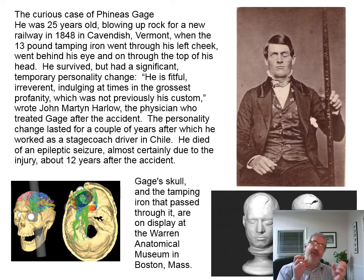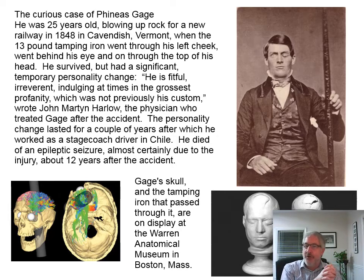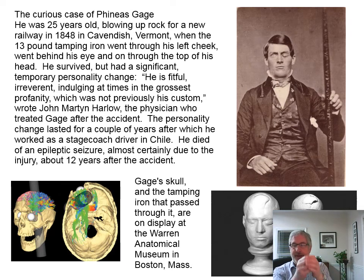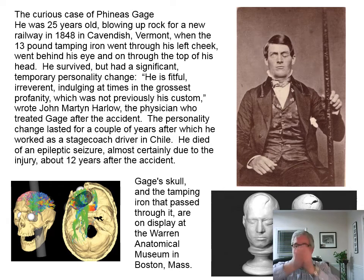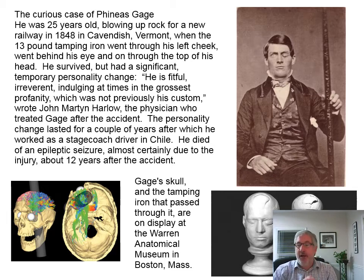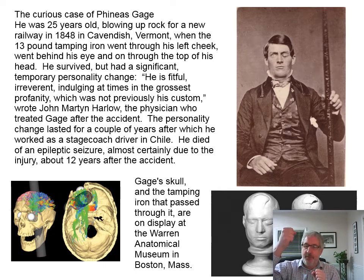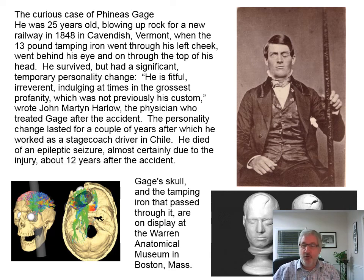First, the curious case of Phineas Gage — a story you have to hear if you're learning about the brain. He was 25 years old, working for the railroad, blowing up rock in 1848 in Cavendish, Vermont. What you did was put some powder in a paper package, drill a hole, push it down with a fuse, and tamp it down with what's called a tamping iron — that's what he's holding in this picture. It's 13 pounds. A spark went off and blew that tamping iron right up through the left side.